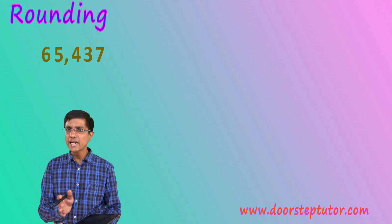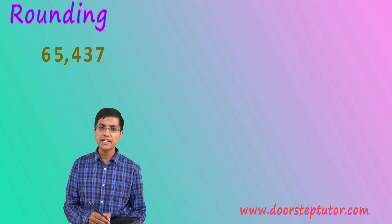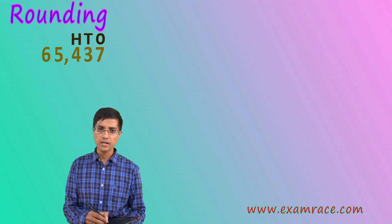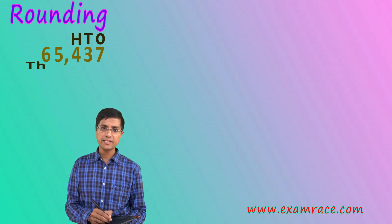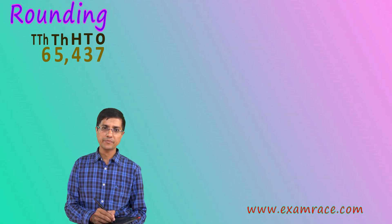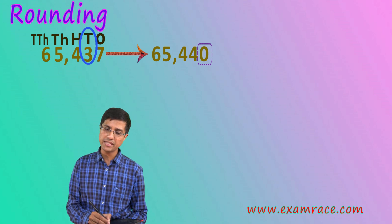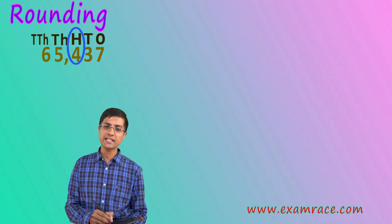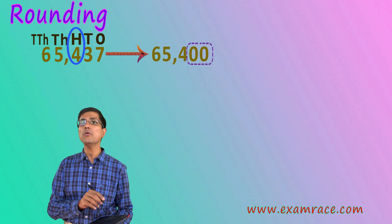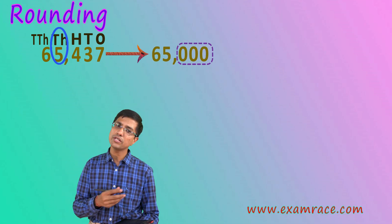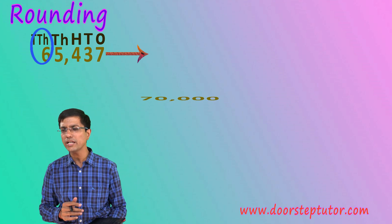There are various types of rounding. I can round to the nearest tens, which means making the ones digit zero. When rounding to the nearest hundreds, I make all the digits below hundreds zero — that's tens and ones. Same thing with thousands: I make hundreds, tens, and ones all zero. And the same applies for ten-thousands and so on.